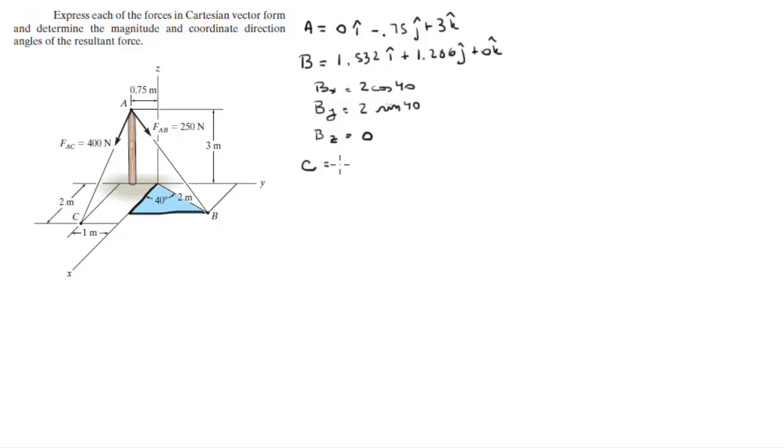Position vector for C is 2i minus 1j plus 0k. So now that we have the three position vectors, we want to find AB and AC.